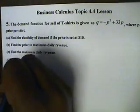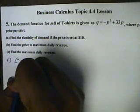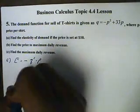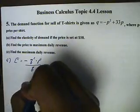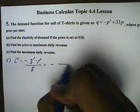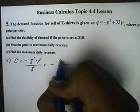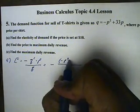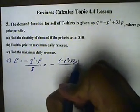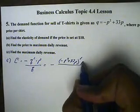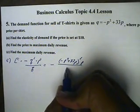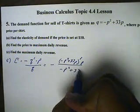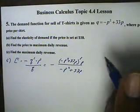The formula for elasticity is negative times the derivative of Q, times the price P, all divided by Q. In this case, Q will be negative P squared plus 33P, and then times P, all over Q, which is negative P squared plus 33P.